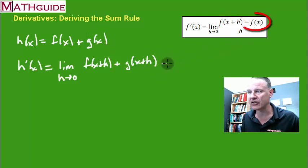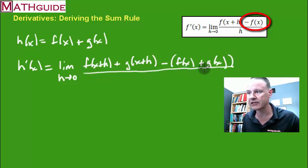Then it says that I have to subtract the original function. Well here's the original function: f of x plus g of x. And of course I have to subtract the whole function. So that's why I'm putting parentheses around it. It's a common error that people leave off those parentheses. Okay. And of course I've got h in the denominator.